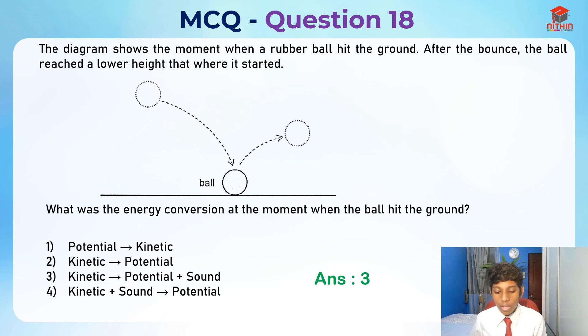Because kinetic to potential. So basically they are asking us energy conversion at the moment when the ball hits the ground. So basically from here to here, okay?